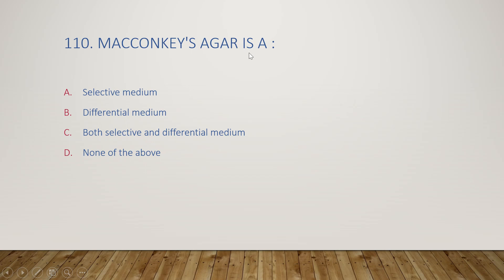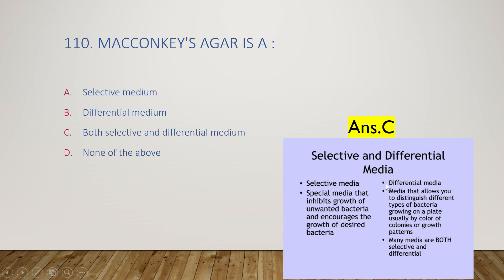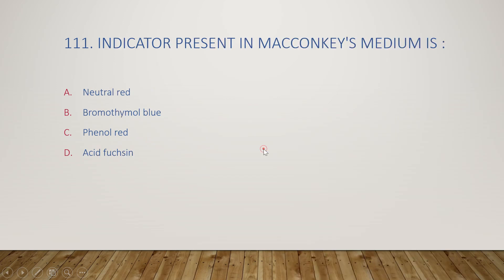Next question: MacConkey's agar is a selective medium, a differential medium, both selective and differential, or none of the above? The right answer is option C, both selective and differential. Selective media inhibit growth of unwanted bacteria and encourage growth of desired bacteria, while differential media allow you to distinguish between two types of bacteria — like gram-positive and gram-negative — usually by colony color or growth pattern.